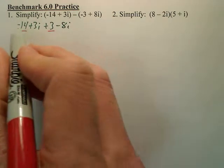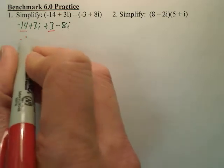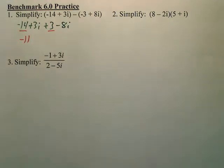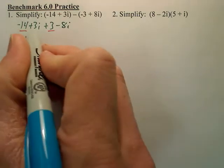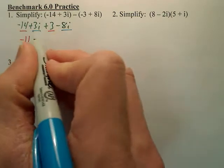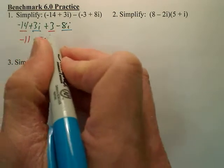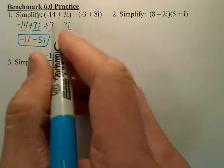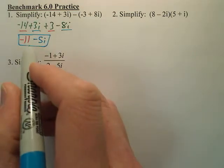Then I'm going to combine like terms. So this and this will give you negative 11, and these two will give you negative 5i. When you subtract these two imaginaries, that's your new imaginary.